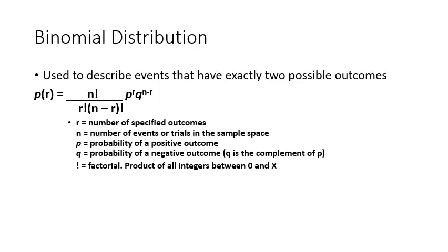Here you see the formula for the binomial distribution. For some of you, this might be the first time you've ever seen factorial. Because of that, this might be one of the most complex formulas we do all semester. The factorial is going to be the product of all integers above zero, between zero and going to X, where X is the number you're interested in. For the purposes of this class, we're going to stick with four factorial as the highest.